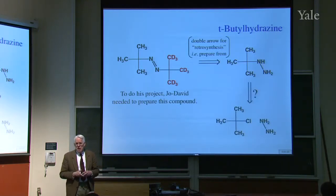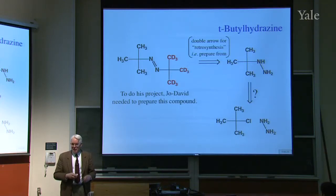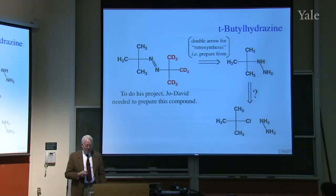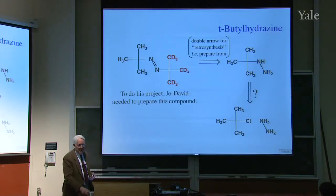You can buy hydrazine. That's cheap. You can buy T-butyl chloride. That's cheap. At that time, 40 years ago, you could buy a can of it that size for about $5. So all you have to do is do a substitution reaction, where the nitrogen displaces chloride. Does that sound like a good synthetic plan?